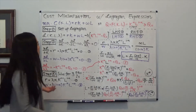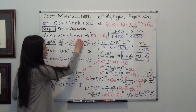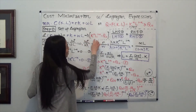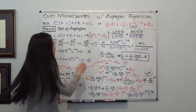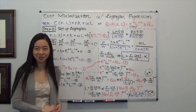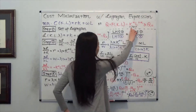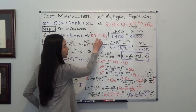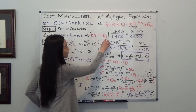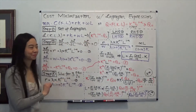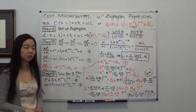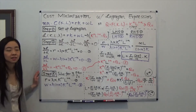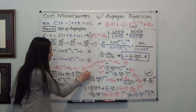The first step is to set up the Lagrangian. The Lagrangian is equal to your cost function — that's the function you're trying to minimize — minus lambda times your quantity constraint. Notice we use minus lambda because we're minimizing. Your output has to be greater than or equal to Q0, so we write the output (the larger term) minus Q0 (the smaller one). After setting up the Lagrangian, we take partial derivatives with respect to K, L, and lambda, and set them equal to zero, giving us three equations.